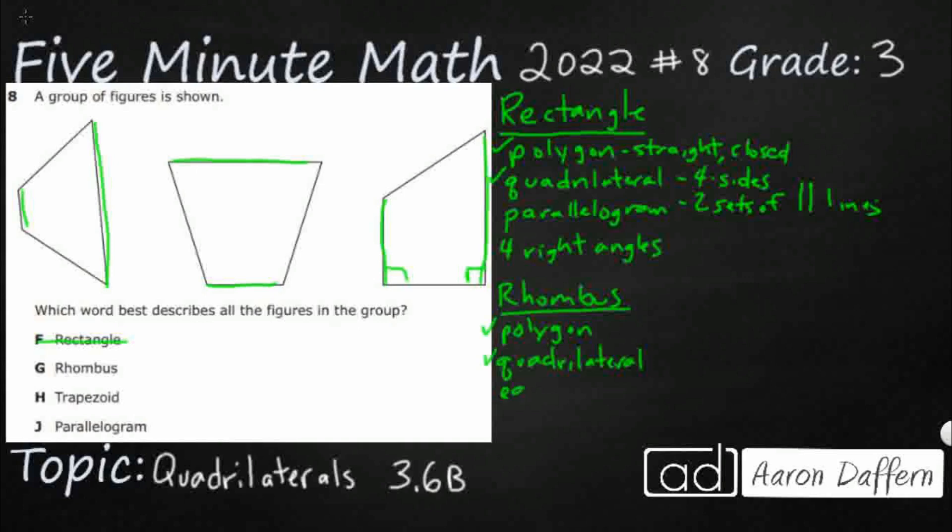They have four equal side lengths, so all four side lengths have to be equal, and it also has to be a parallelogram. So it's a special parallelogram. It's got four equal side lengths.